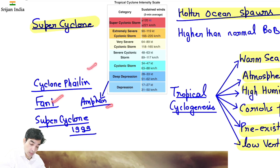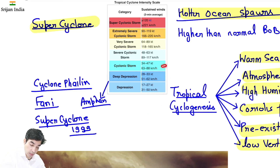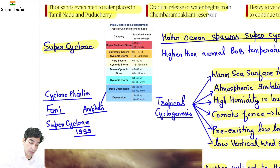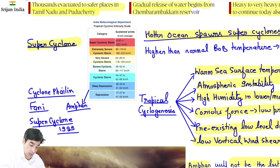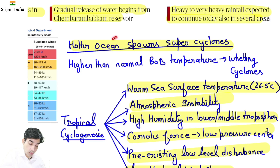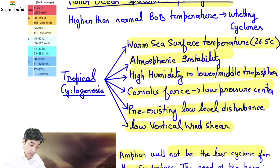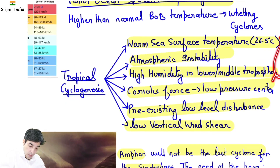Usually pahle depression banta hai, phir inka nature change hota hai — woh upgrade hokar extremely severe bhi ban sakta hai. Hotter ocean — Bay of Bengal — toh yahaan cyclones generate zyada hote hain, tendency zyada hoti hai tropical cyclogenesis ke liye. Yeh points important hain.